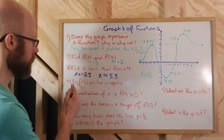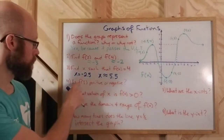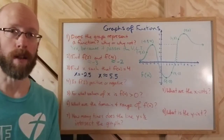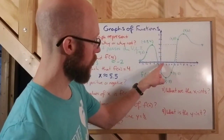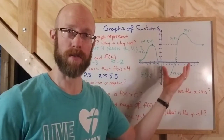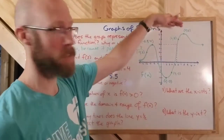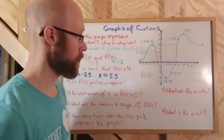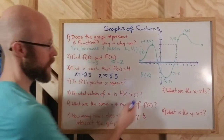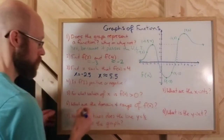Next question: is f of 1 positive or negative? We're looking to see if the function value — that's the y value — is positive or negative when x is 1. If x is 1, you go to 1 on the x-axis and then go to the graph. Here we have to go down to get to the graph, which means the function value is negative. Anything below the x-axis is a negative function value; anything above is positive. So f of 1 is negative.